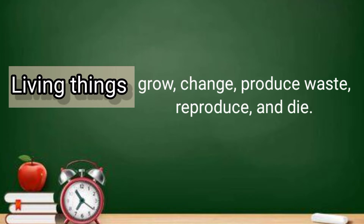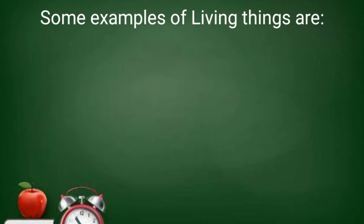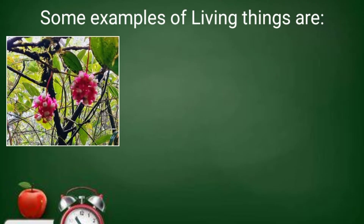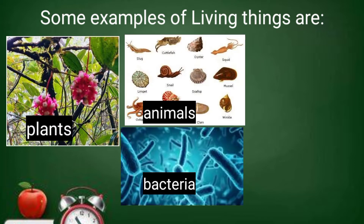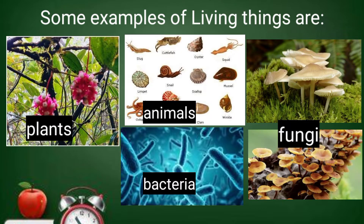Living things refers to organisms that grow, change, produce waste, reproduce, and die. Some examples of living things are plants, animals, bacteria, and fungi.